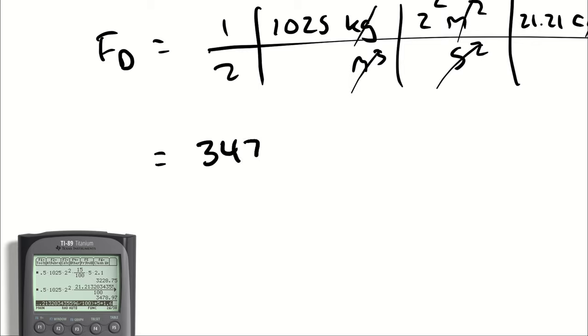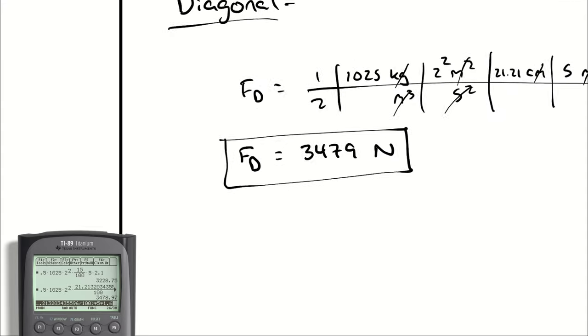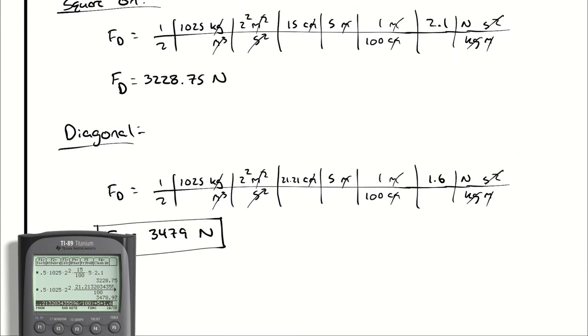Interesting, right? The diagonal orientation has a higher drag force, even though it has a smaller coefficient of drag. The drag force is a function of coefficient of drag and also cross-sectional area. We have to bear in mind how the relative position of our object affects the drag force in addition to its coefficient of drag.